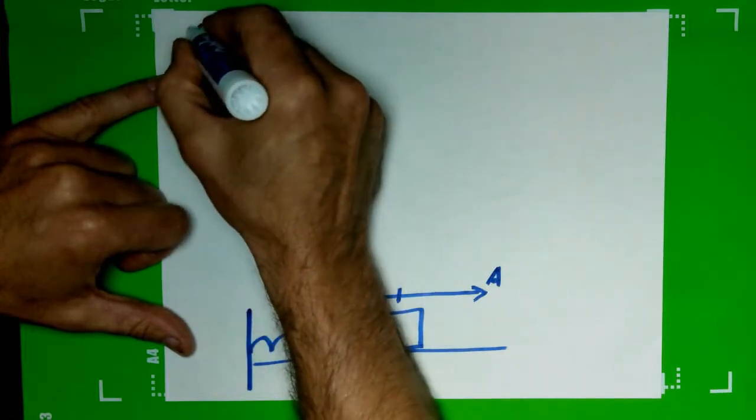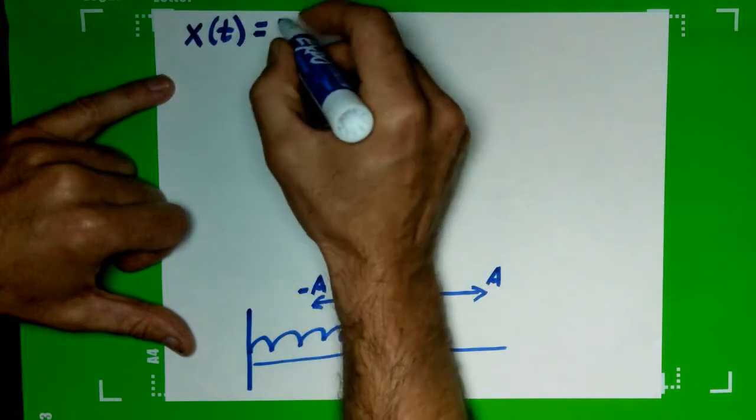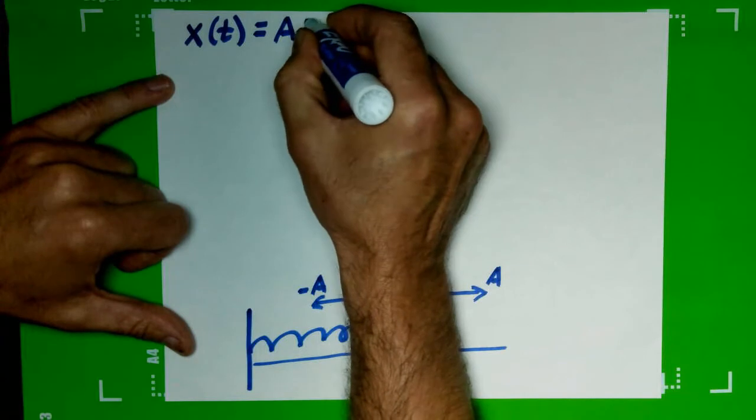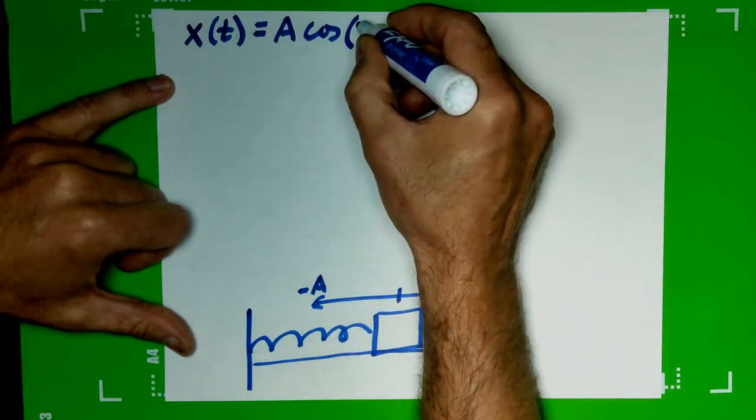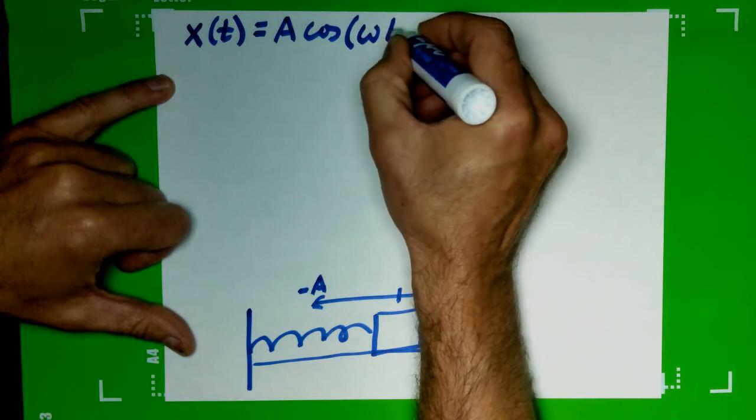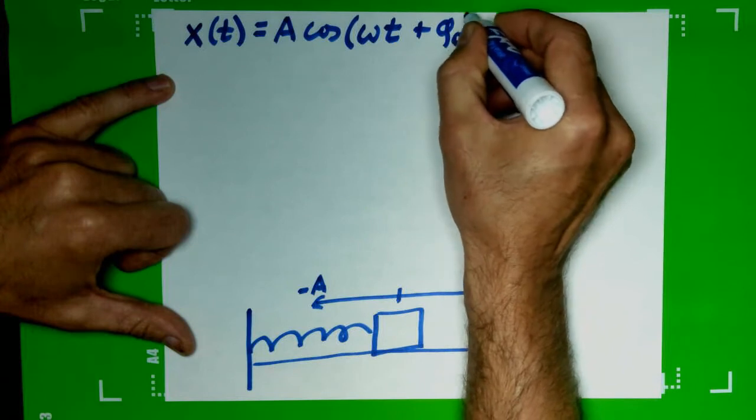So I'm going to rewrite that equation. x(t) will be equal to our amplitude times the cosine of what we're calling the phase, which is two parts: the time-dependent part, plus however we start our phase constant.